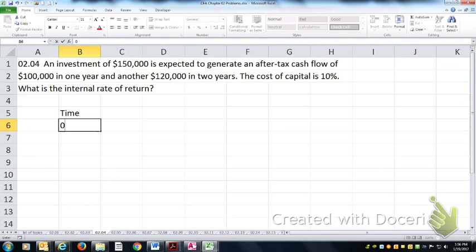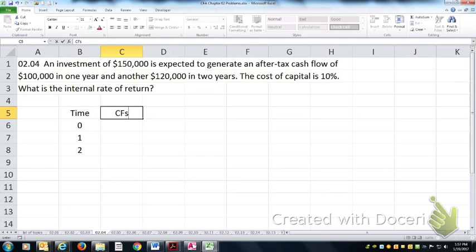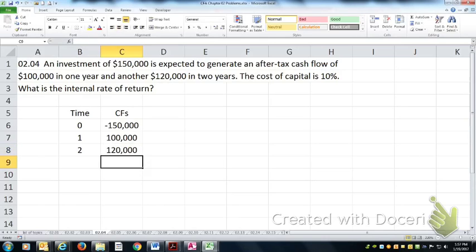So the time periods are zero, one, and two, and the cash flows are negative $150,000—that's $150,000 that you have to give to the investment company. And in return, you'll get $100,000 at the end of the first year, $120,000 at the end of the second year.